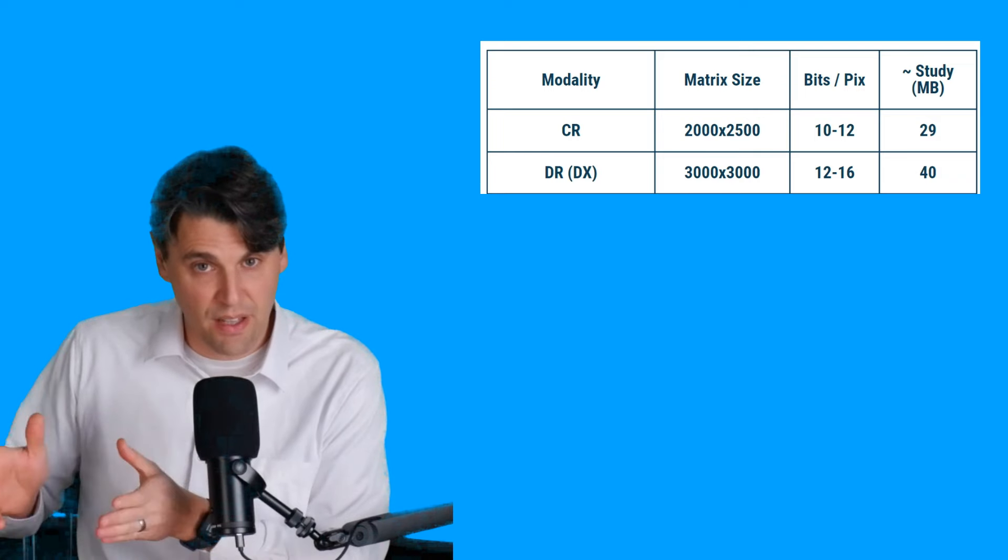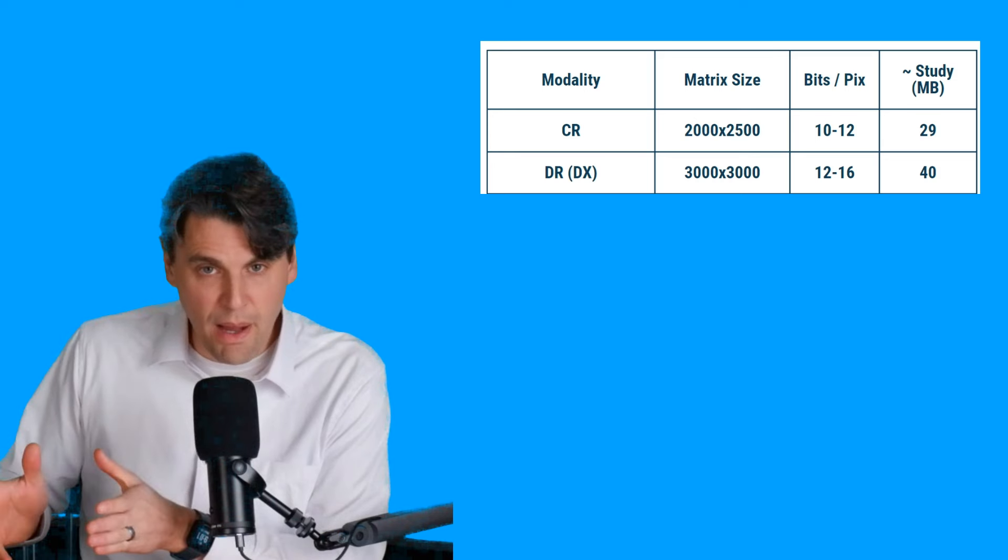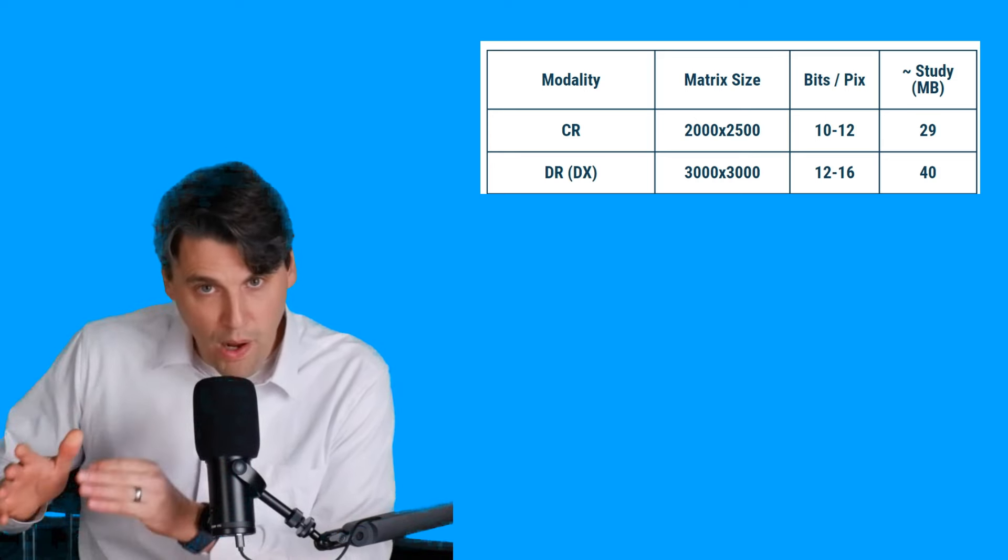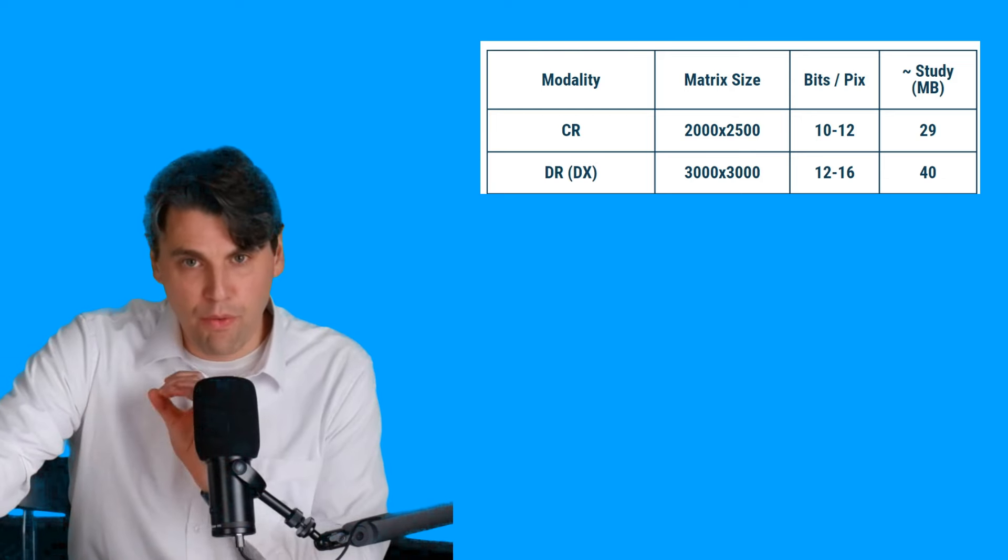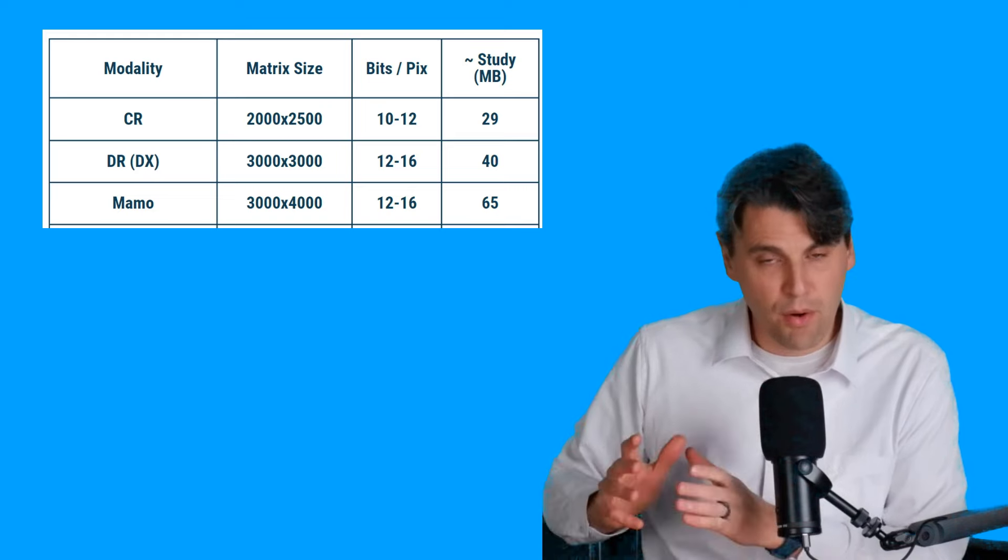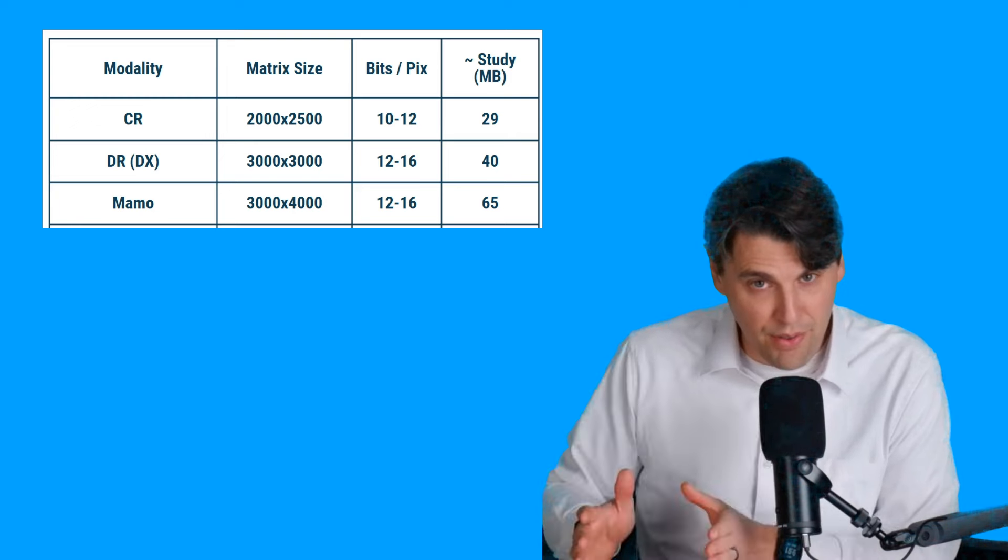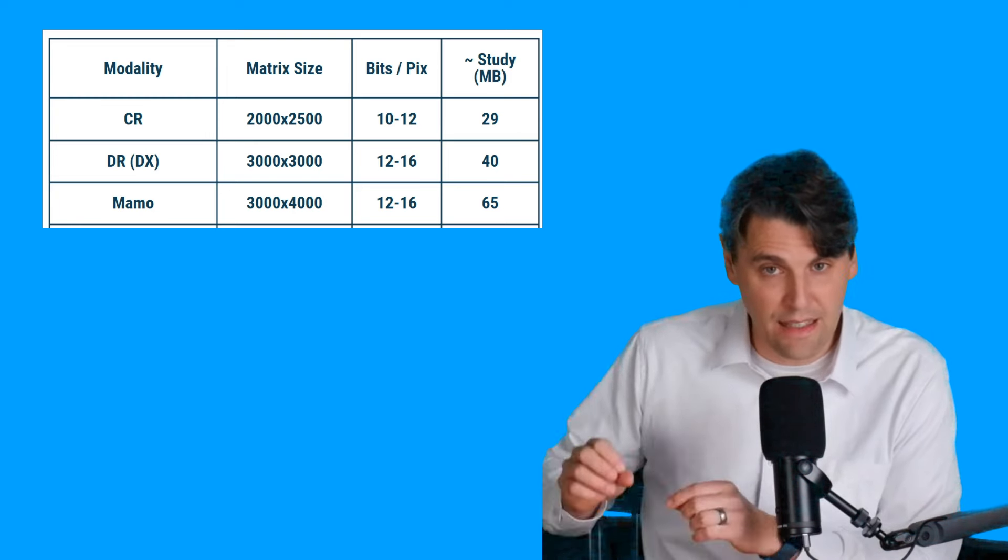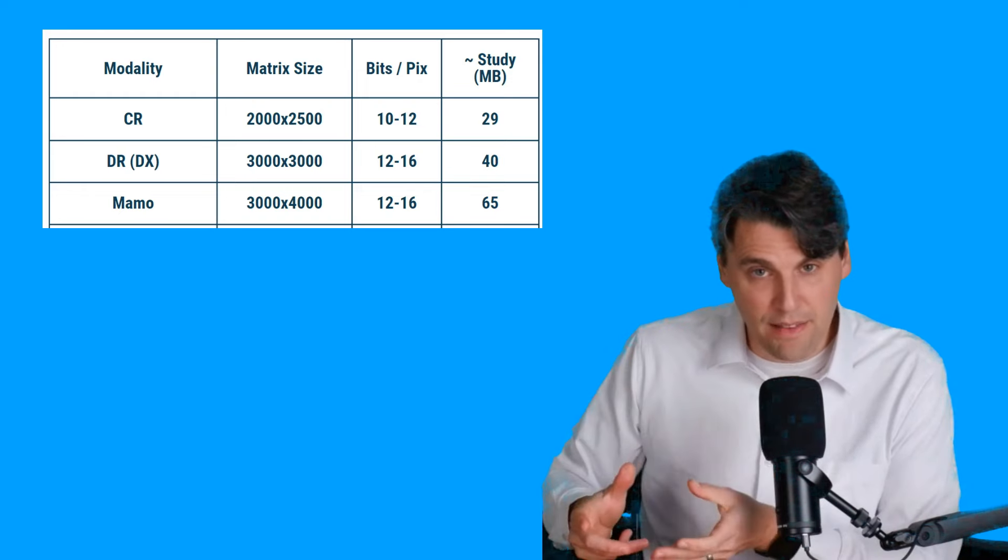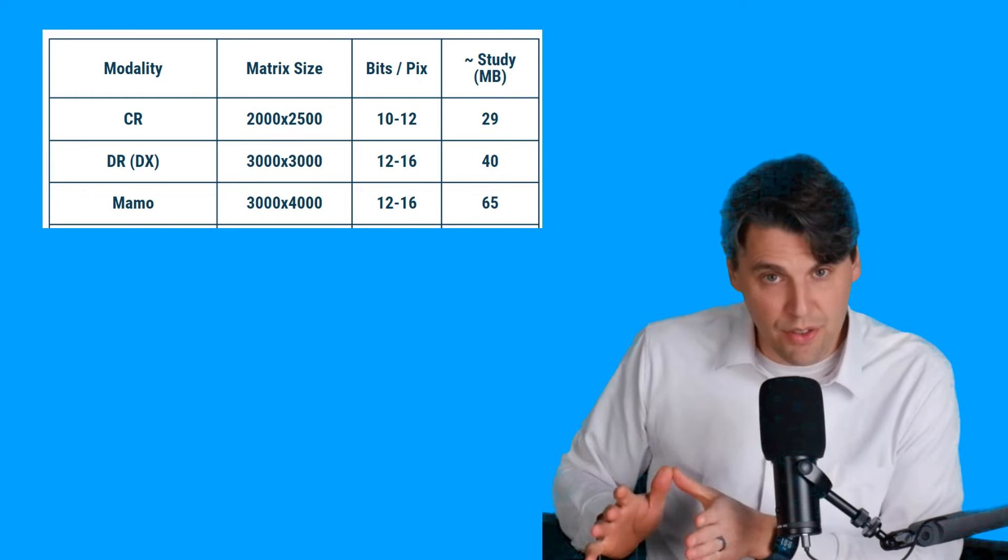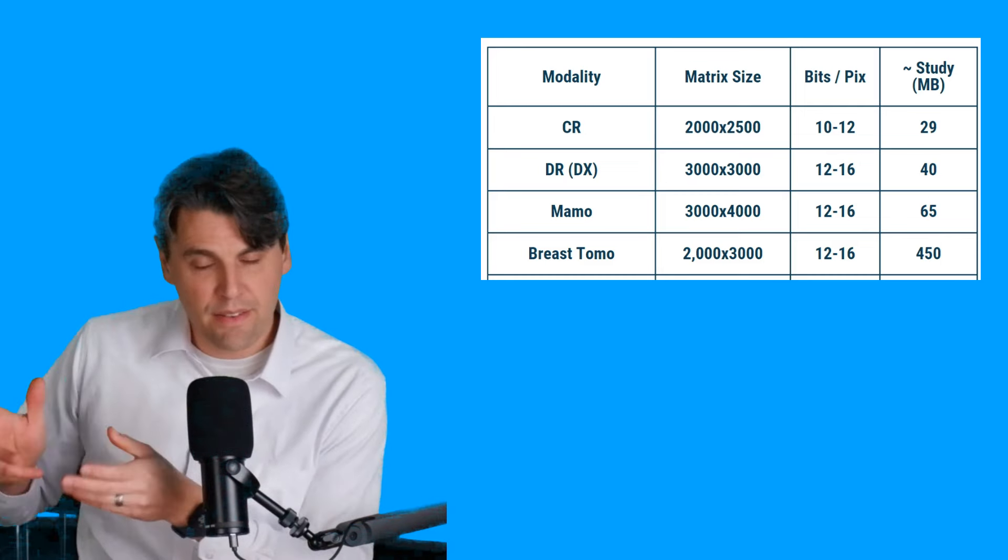Then for your DR or DX system, a typical digital x-ray system, matrix might be slightly larger, about 3000 by 3000, 12 to 16 bits per pixel. That's going to give you about 40 megabytes. The ammo goes up a little bit more at about 3000 by 4000 because resolution matters the most there, about 12 to 16 bits per pixel. So you're at about 65 megabytes per a given average study.